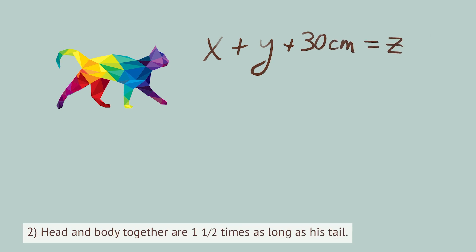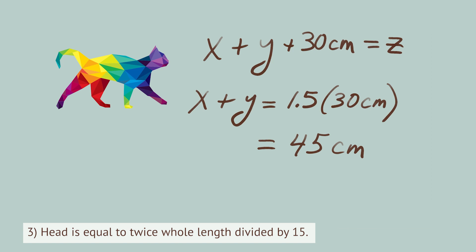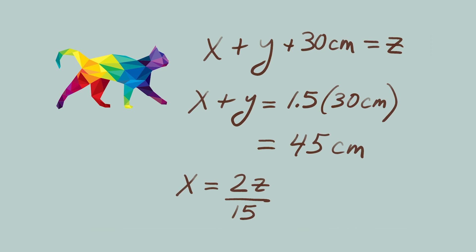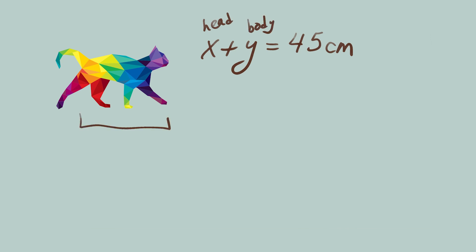Our next sentence tells us that Oliver's head and body together are 1.5 times as long as his tail. Let's write that in math language. The next sentence, giving us a relationship between the lengths, says his head is equal to twice his whole length divided by 15. In math language, we'll write that as x equals 2z divided by 15. Now let's start putting some of these pieces of information together. We know that x plus y equals 45cm — in other words, Oliver's head plus body together equals 45cm.